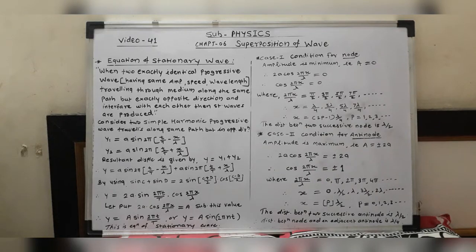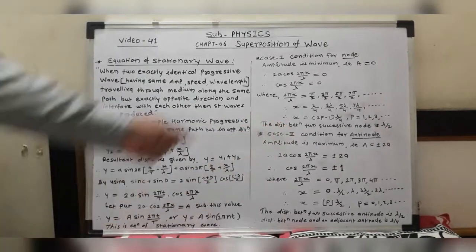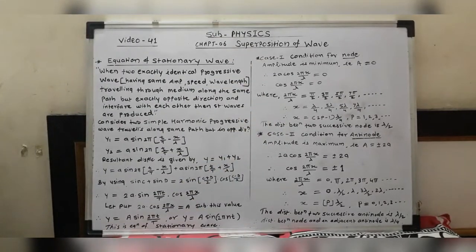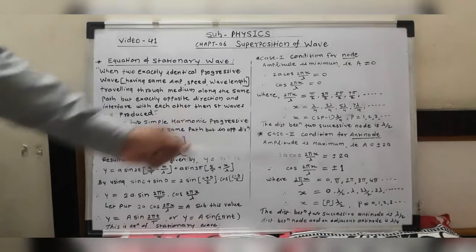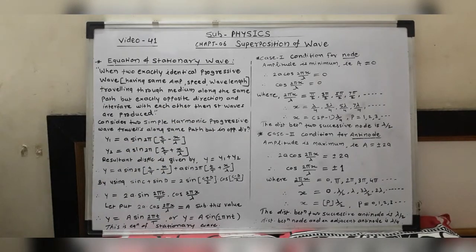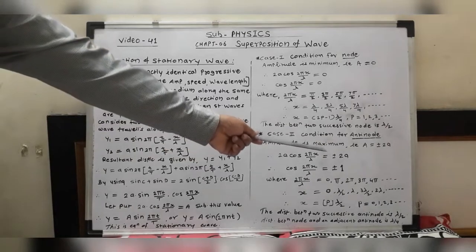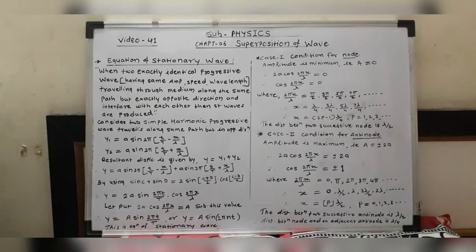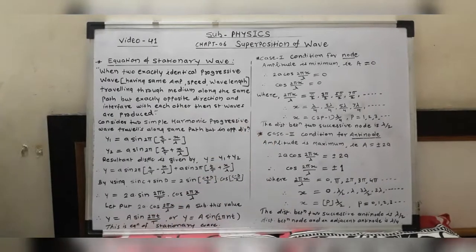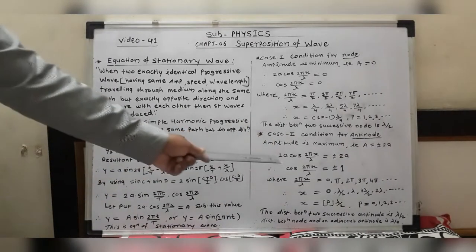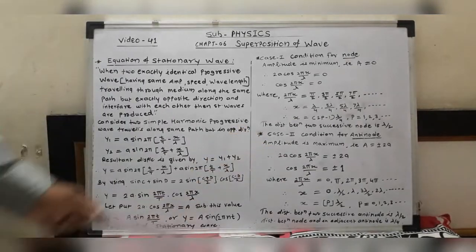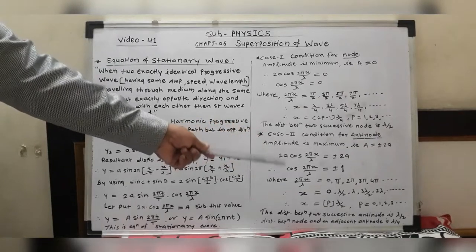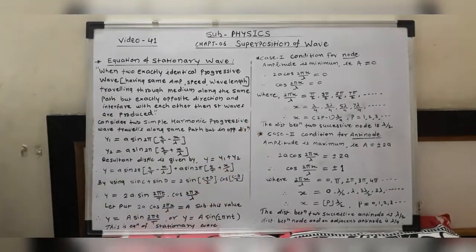Now, Case 2: the condition for an anti-node. When the amplitude of the stationary wave is maximum, the particles vibrate with maximum amplitude. At anti-nodes, A = ±2a. Substituting A = 2a cos(2πx/λ) = ±2a, and cancelling 2a from both sides, gives cos(2πx/λ) = ±1.